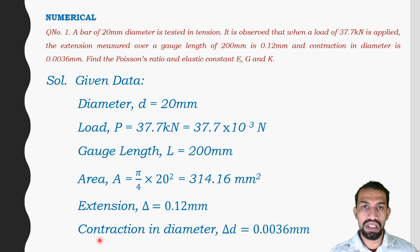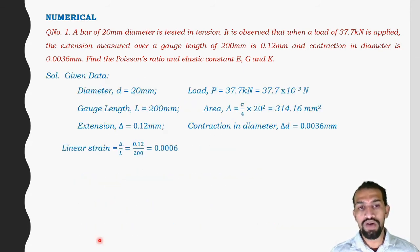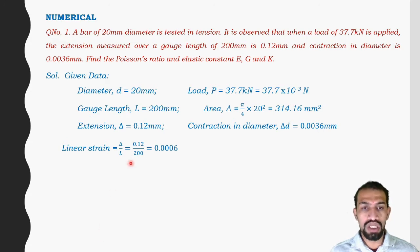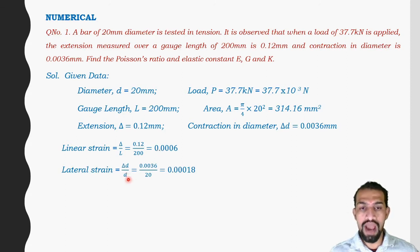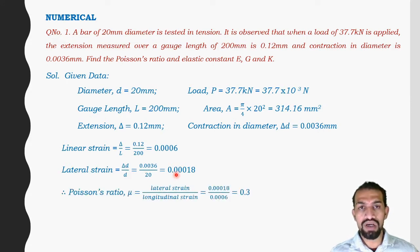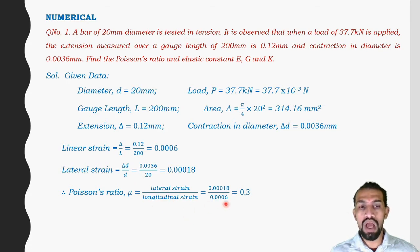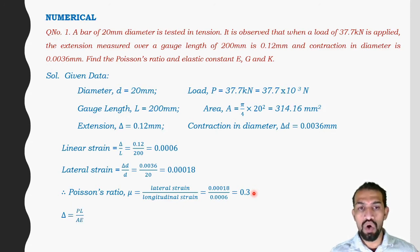When length increases, the lateral dimension decreases — that decrease is the contraction. Linear strain = change in length / original length = 0.0006. Lateral strain = change in diameter / original diameter = 0.00018. Poisson's ratio μ = lateral strain / longitudinal strain. Substituting values, μ = 0.3.